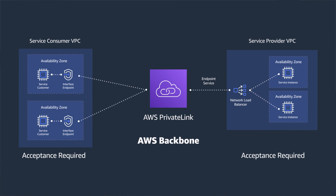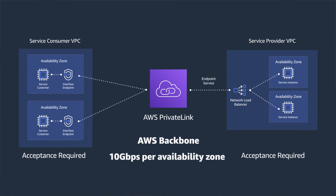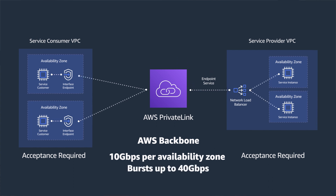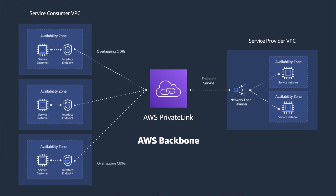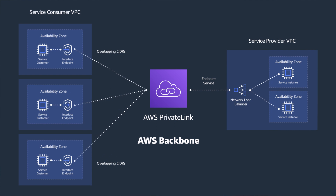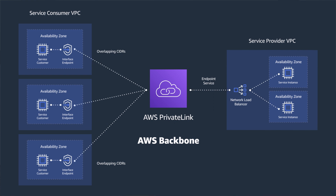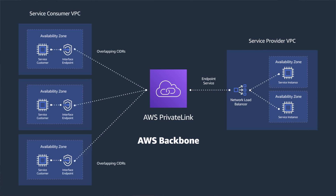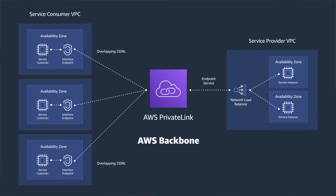The communication between services is private with sustained bandwidth of 10 gigabits per second per availability zone, with bursts up to 40 gigabits per second. You may also need to connect your shared services to many consumer services across several VPCs with overlapping CIDR IP address ranges. A single endpoint service can be consumed by several service consumers from different accounts. PrivateLink removes CIDR overlap concerns and simplifies network management as additional routes are not required.